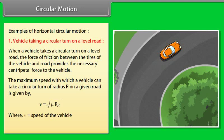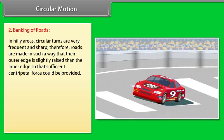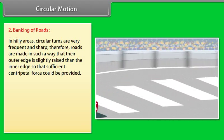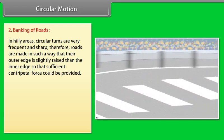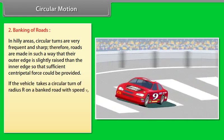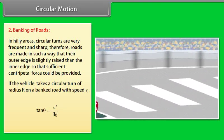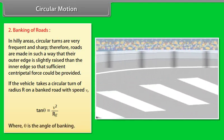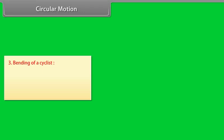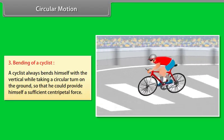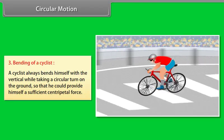Banking of Roads: In hilly areas, circular turns are frequent and sharp. Roads are made with their outer edge slightly raised so that sufficient centripetal force can be provided. If a vehicle takes a circular turn of radius R on a banked road with speed V, then tan θ = V²/(Rg), where θ is the angle of banking. Bending of a Cyclist: A cyclist always bends himself from the vertical while taking a circular turn so that he can provide himself sufficient centripetal force.